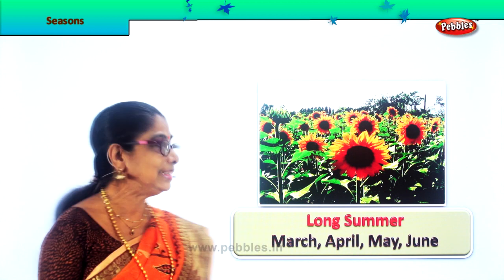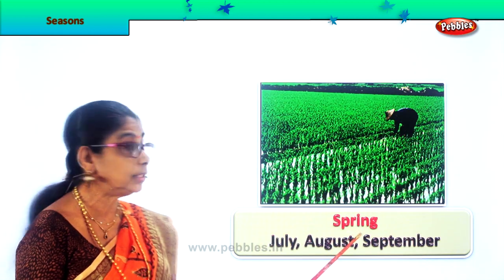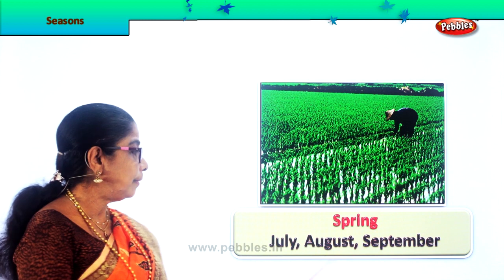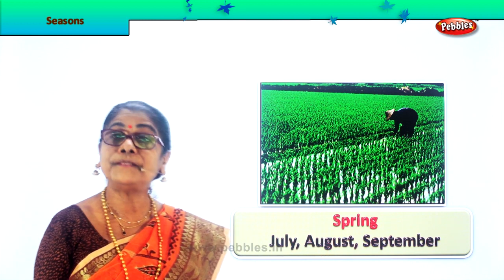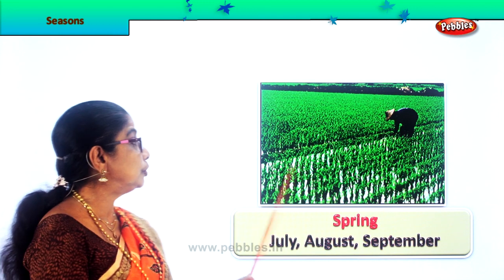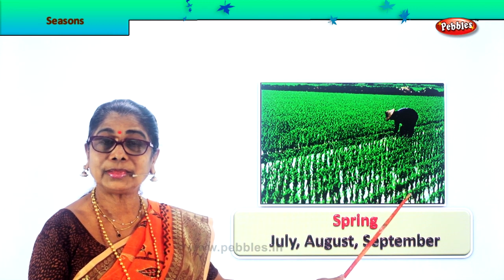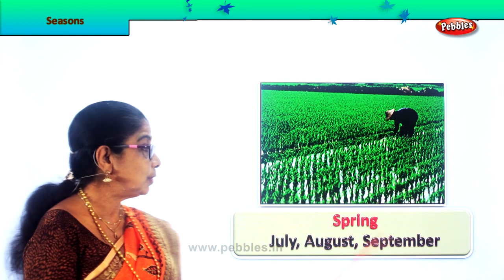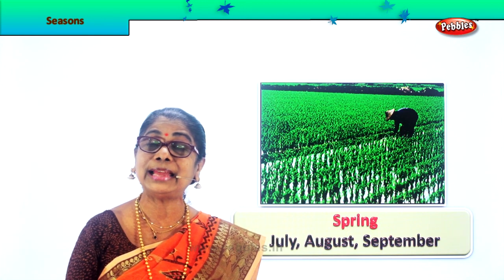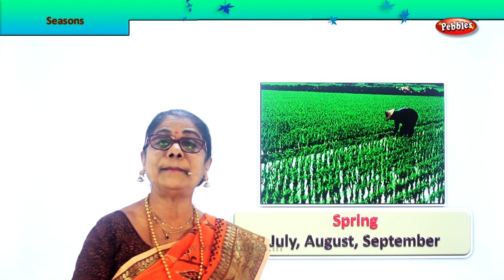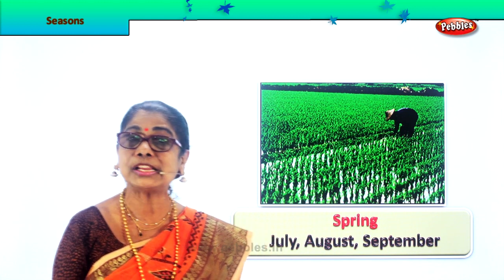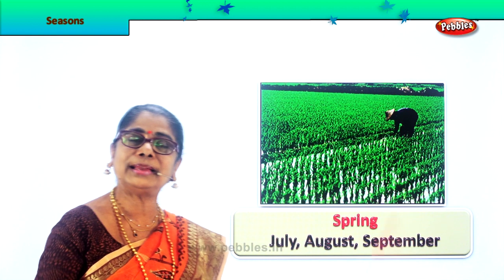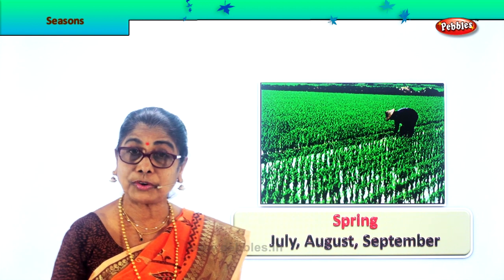The next season after summer is springtime — that's the time shoots come. In June, July, August, farmers get a little bit of rain and sow seeds so that you and I have lots of grains to eat. Spring season is the time when farmers let small shoots come up in huge fields. With a little bit of rain in July, August, and September, the sprouts grow.